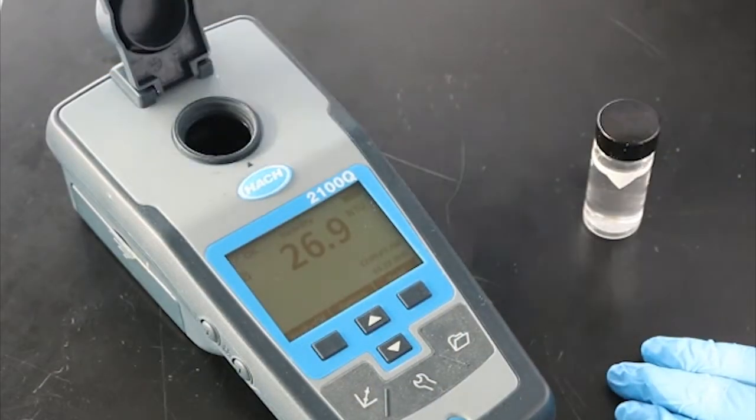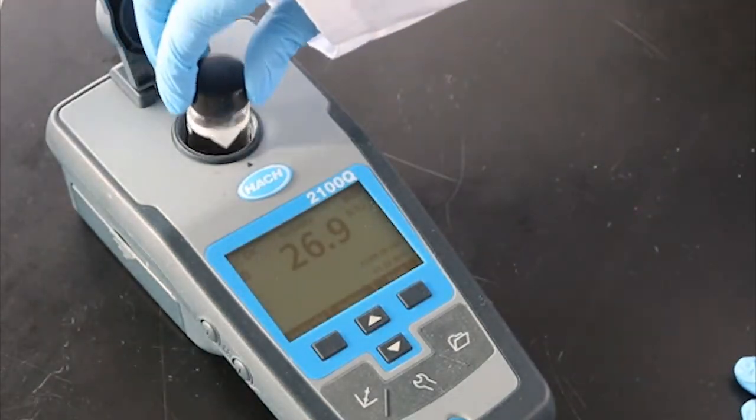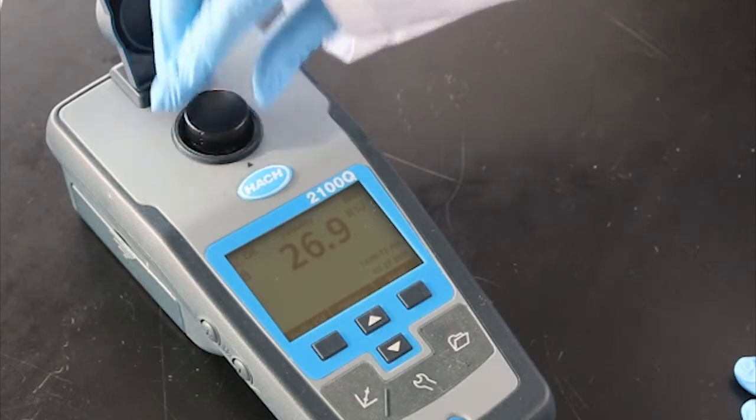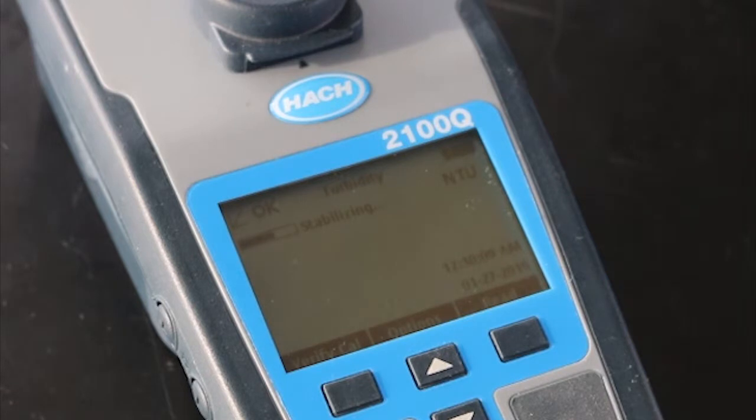Insert the cell into the cell compartment so that the orientation mark aligns with the one on the instrument. Close the instrument lid. Press read. The instrument will stabilize and show a turbidity result in NTU or nephilometric turbidity units.